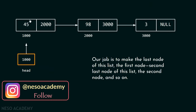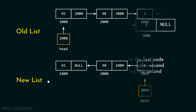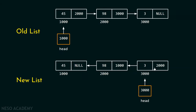Let us suppose we already have this list and the head pointer is pointing to the first node. Our job is to make the last node the first node, the second last node the second node, and so on. The head pointer must point to the last node of this list, since the last node becomes the first node.